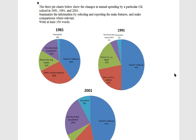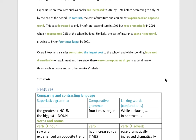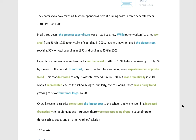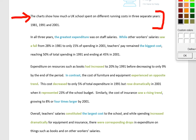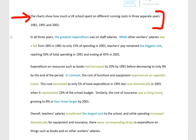All right, are you ready? Now please read with me — don't only listen, speak aloud. So we're going to read it together and then I will highlight some features. Let's go. The charts show how much a UK school spent on different running costs in three separate years: 1981, 1991 and 2001. That is the overview.